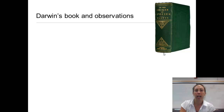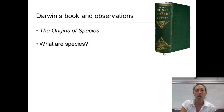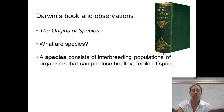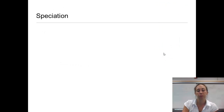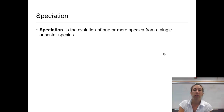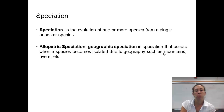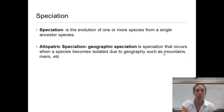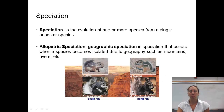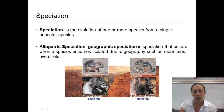Darwin's book, The Origins of Species. A species consists of interbreeding populations of organisms that can produce healthy, fertile offspring. Speciation is the evolution of one or more species from a single ancestral species. Allopatric speciation, or geographic speciation, occurs when a species becomes isolated due to geographical features such as mountains and rivers — for example, four different species of chipmunk in the Grand Canyon, each with different adaptations for their specific area.